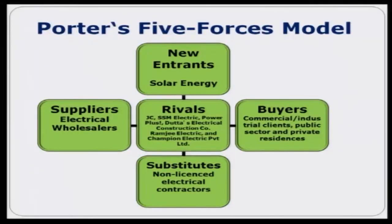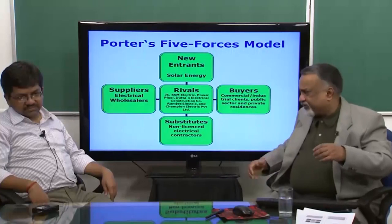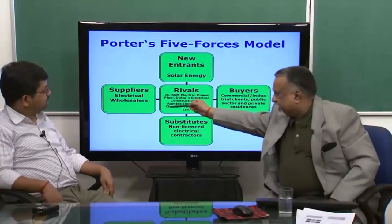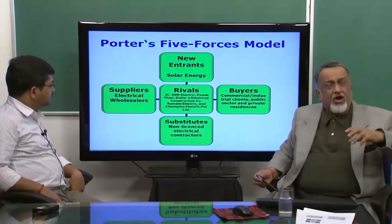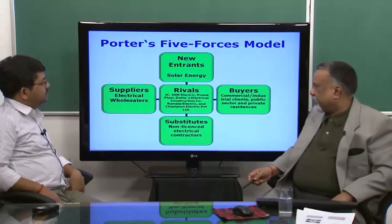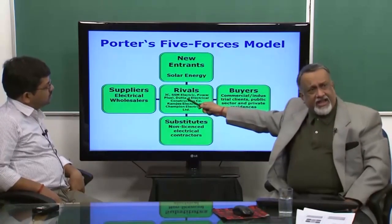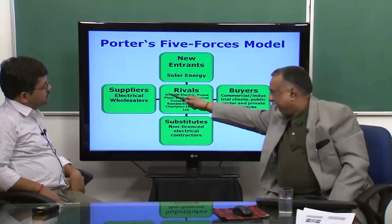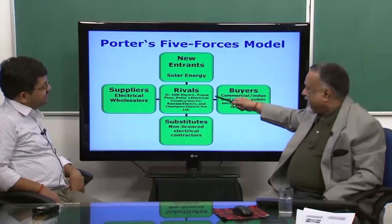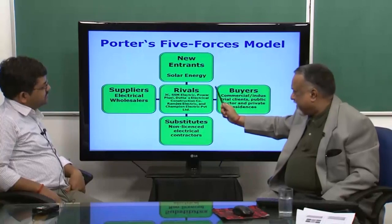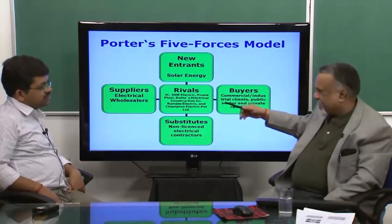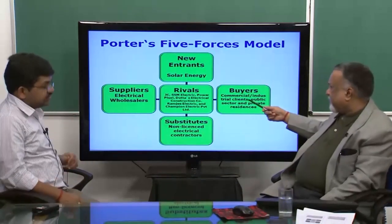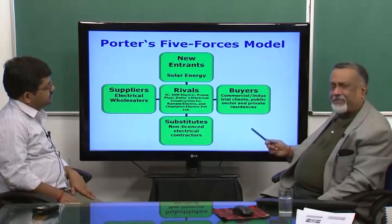We had discussed Porter's five forces model earlier. Let us now see how it actually operates. On the left-hand side are the electrical wholesalers who supply contactors, switches, starters, lights, and fixtures. This is the competitive arena — the rivals: my company, Professor Mishra's company, Daktas Electrical Construction Company, Ramji Electrical, and many others — imaginary names, but quite real. And then there are buyers: commercial buyers, industrial clients, public sector and private sector residences. For a contracting company, the buyers are mostly the builders — for large public projects, private residence projects, factories, or offices.